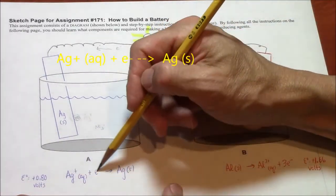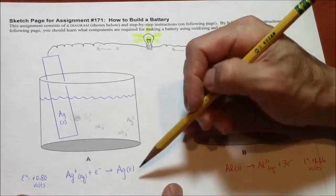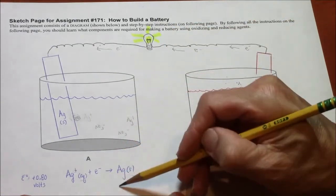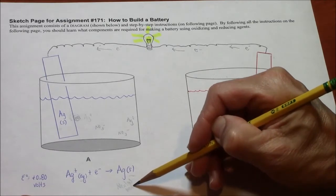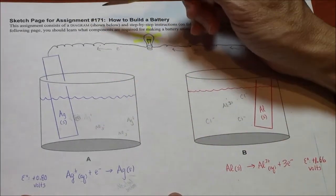That's what this half reaction says. The aqueous ion becomes a solid neutral. Let's write the word neutral. Metal. So we're creating silver metal at this electrode.